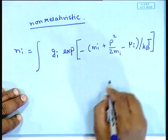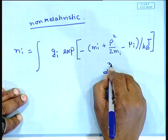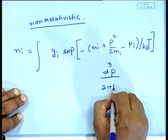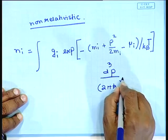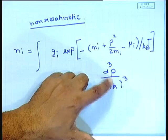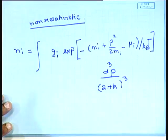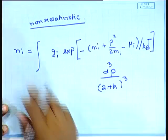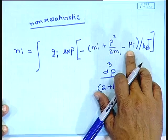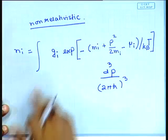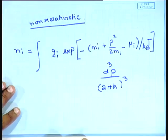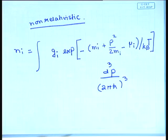To get the total number density, you have to integrate over all momentum states: integrate d³p/(2πℏ)³ times the Boltzmann factor. This is the number density of the i-th particle type. There is a chemical potential which comes in, and a spin degeneracy factor g_i. Once you do this integral you get the number density of particles.